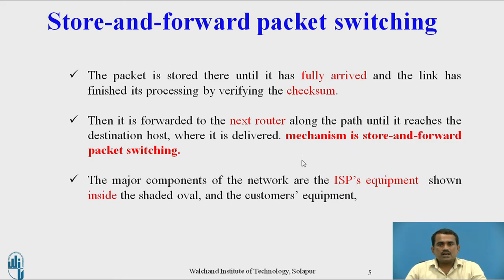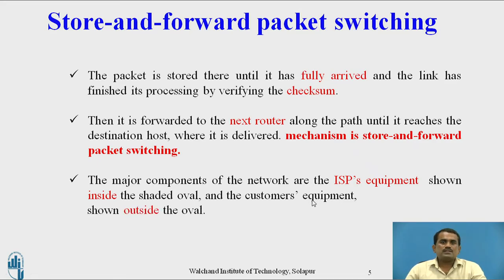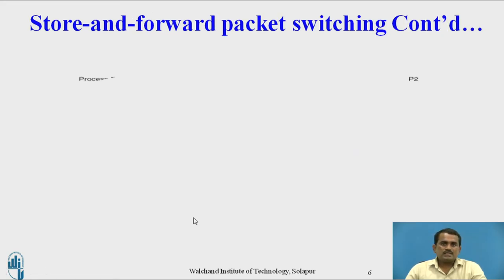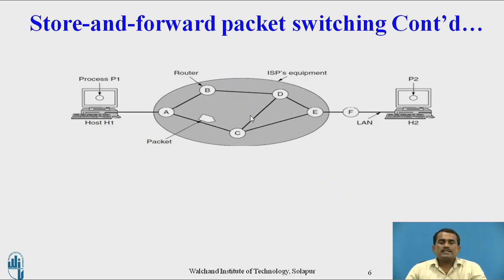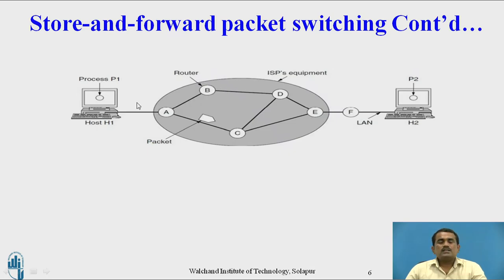The major components of the network are ISP equipment — that is, internet service provider equipment, shown inside the shaded area — and outside, the customer's equipment. In this diagram, there is a simple example of how to use the concept of store and forward packet switching. Here process 1 and process 2 are present, with different routers and ISPs. Process 1 wants to transfer data to process 2.